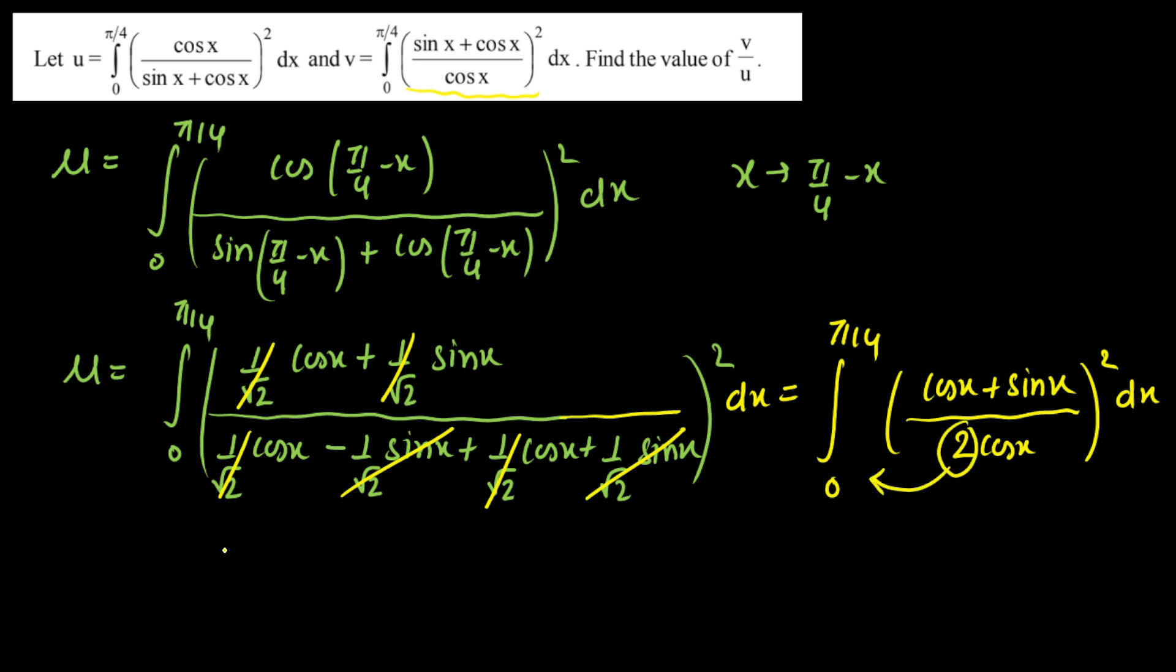So what we're going to do: take this outside of the square. We'll get u as 1/4, because it's coming out of the square. The moment I take 2 outside, this will convert to v. Now in the question they are asking v by u, so v by u will equal 4. So our final answer is 4.